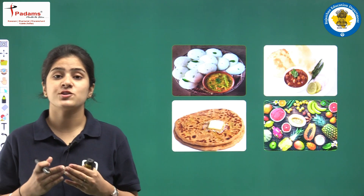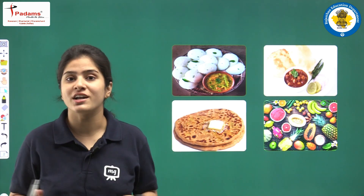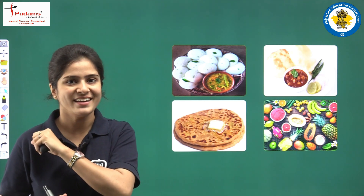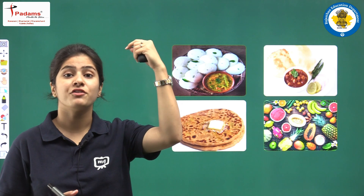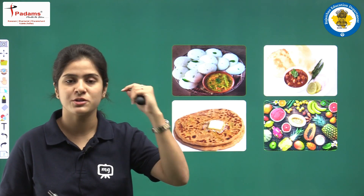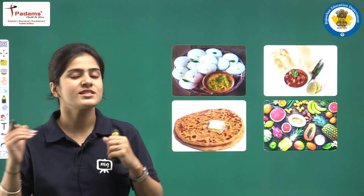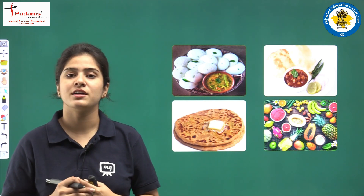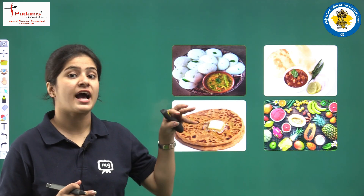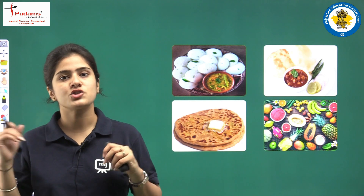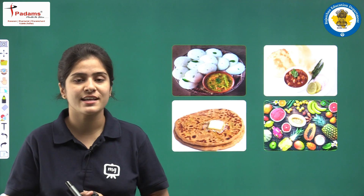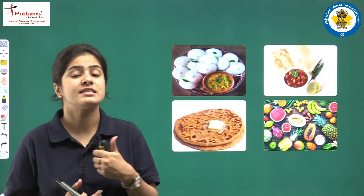India is a huge country with many different states. When talking about the northern side of India, we eat Aloo Paratha, Chole Bhature, Dal Baati Churma. In southern states, we eat Idli Sambar, Dosa, Uttapam. In Maharashtra, we have Vada Pav. In Gujarat, we have Khandavi, Khaman Dhokla, etc. There is a lot of food variety across different states.